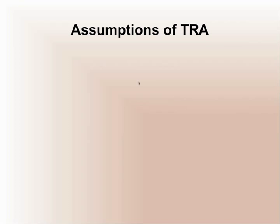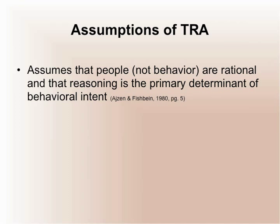Here are some basic assumptions of the theory of reasoned action. The first and important one is that it assumes people are rational and that reasoning is the primary determinant of behavioral intention. This means that in order to apply the theory of planned behavior, we must assume people behave in rational ways. The theory is not applicable for spontaneous behaviors, random behaviors, or outbursts of anger or aggression. We're talking about premeditated, methodical, rational behaviors — being screened for tuberculosis, being screened for breast cancer, eating a healthy diet, exercising.